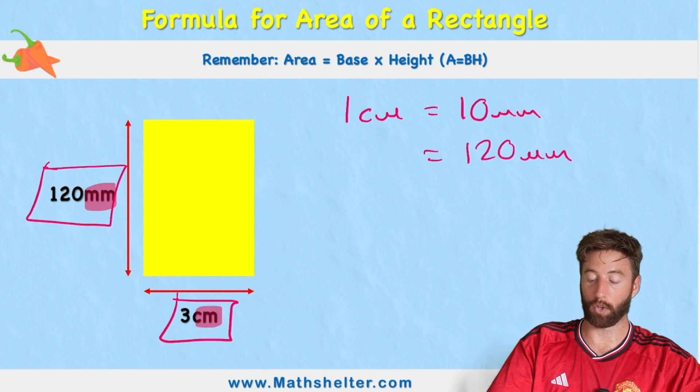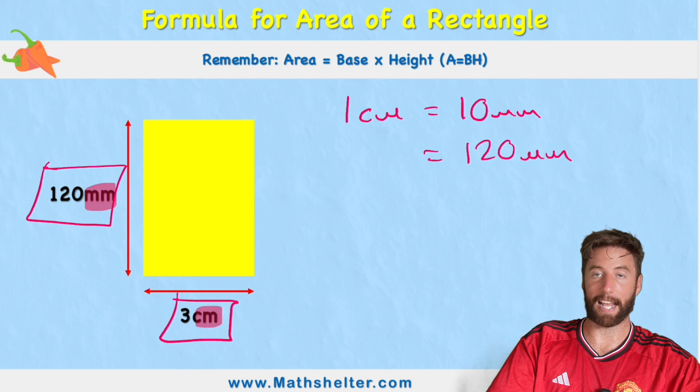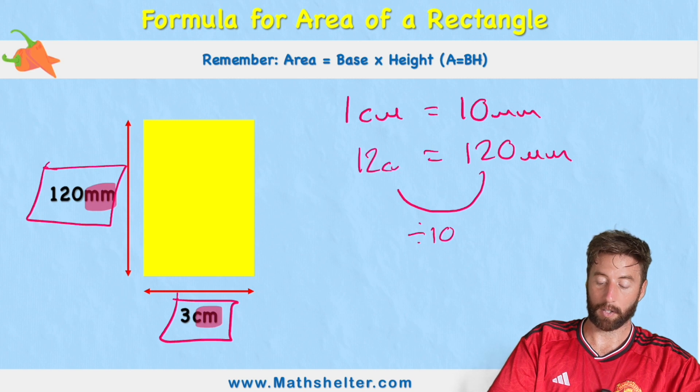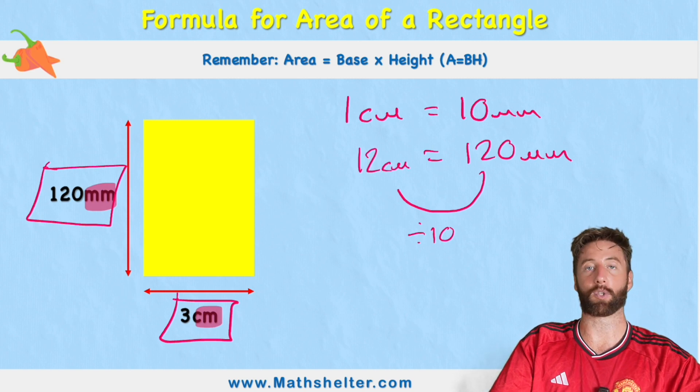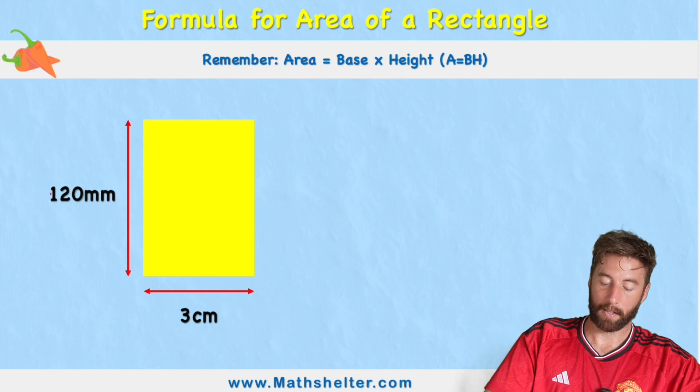So if I have 120 millimeters, what I need to do is divide this by 10 to get to my centimeters. So 120 divided by 10 equals 12. So 12 centimeters equals 120 millimeters. So let's get rid of 120 and write 12 centimeters.